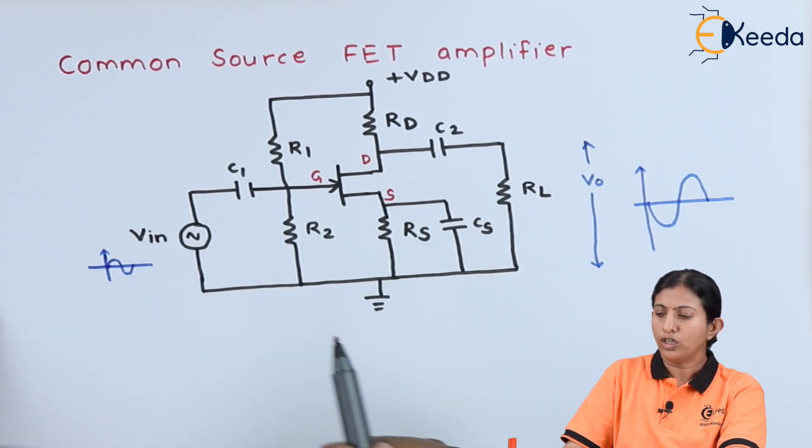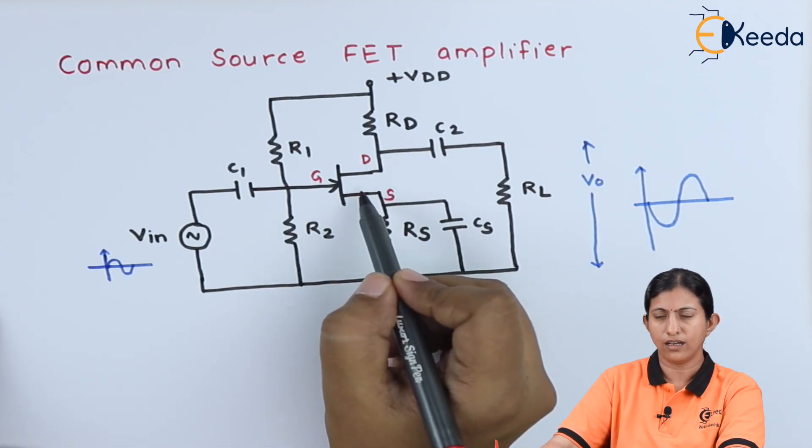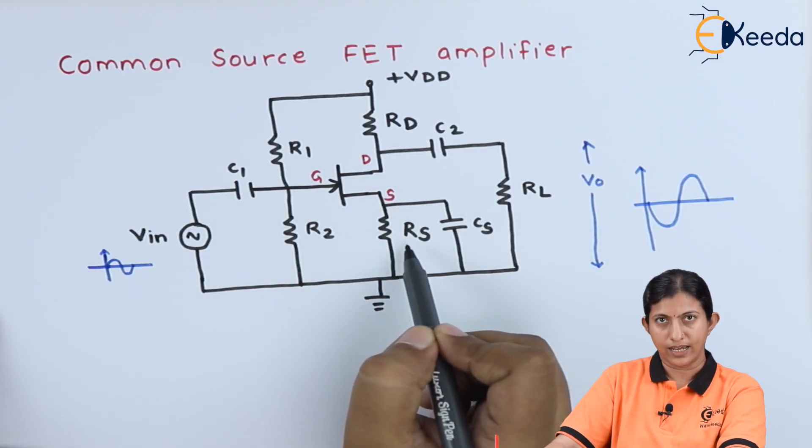Now consider the operation of this circuit. Whenever we are not applying any input signal, at that time the operating current, that is ID or quiescent current, will flow through the transistor because of voltage divider biasing R1, R2, and RS.